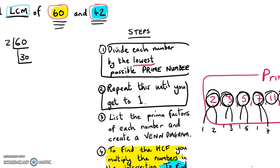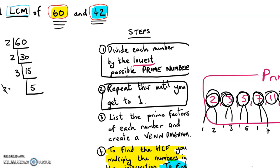Now I repeat this until I get to 1. I try to divide by 2 again — 2 into 30 gives 15. I try 2 again but 2 doesn't go into 15, so I'll try the next lowest possible prime, which is 3. And 3 does go into 15 — it goes in 5 times. Now does 2 go into 5? No. Does 3 go into 5? No. The next lowest prime that will go in is 5. And when I divide 5 by 5, I get 1. So I've stopped — I repeat until I get to 1, which I've just done.